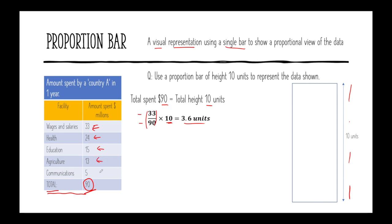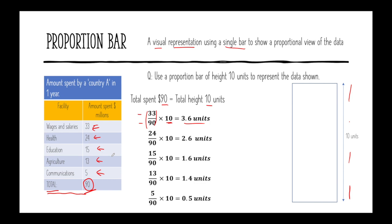Can you find the fraction of the height for all the rest of the facilities — health, education, agriculture, communications? Pause the video and find out what height would represent each one. Health is $24 million, so that's 24 over 90 multiplied by 10, giving us 2.6 units. Education was $15 million — that's 1.6 units. Agriculture is $13 million — 1.4 units. And communications is $5 million — just 0.5 units.